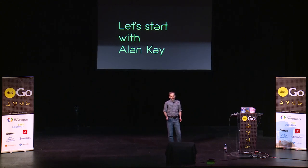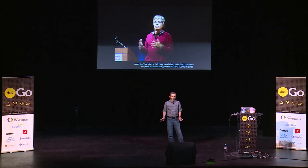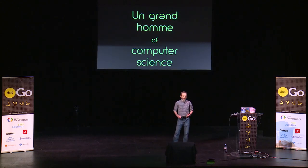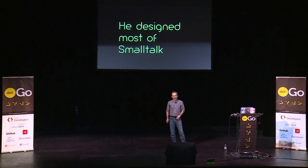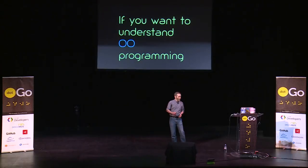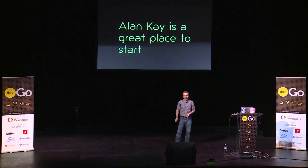Let's start with Alan Kay. This is Alan Kay. If you don't know him, Alan Kay is one of the grand figures of computer science, a very important figure. He designed a lot of Smalltalk, which was a very early and very influential OO language. He was the guy that coined the term object-oriented. If you want to understand OO programming, then Alan Kay is a great place to start.